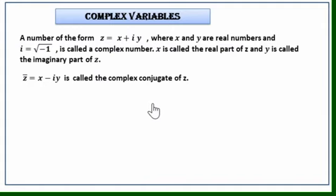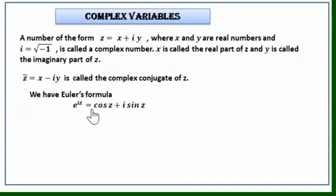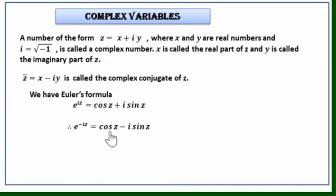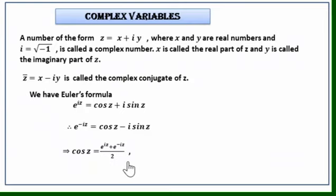We will find the complex representation of sine and cosine functions. From Euler's formula, e^(iz) = cos z + i·sin z. Replacing i by -i on both sides, we get e^(-iz) = cos z - i·sin z. Adding these two equations: e^(iz) + e^(-iz) = 2cos z, so cos z = (e^(iz) + e^(-iz)) / 2.